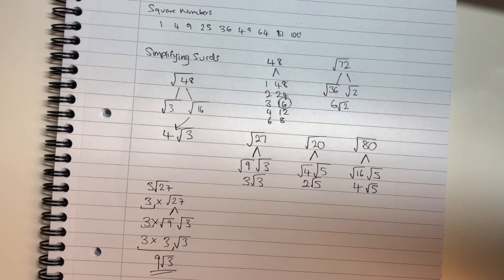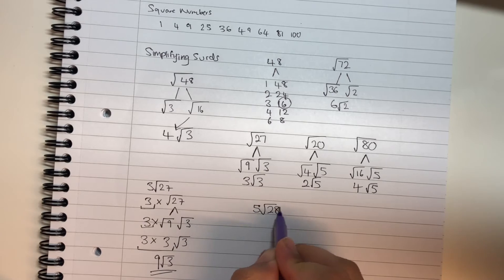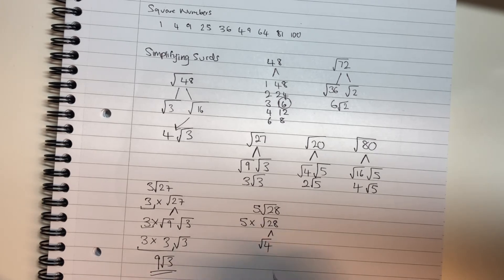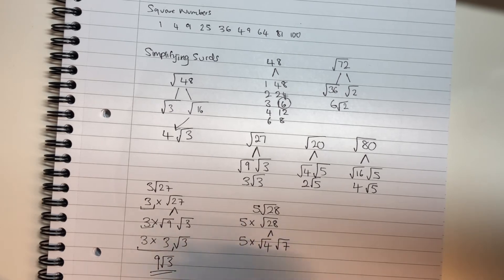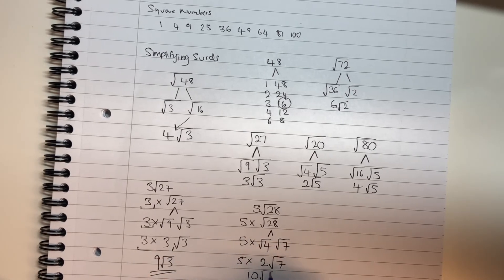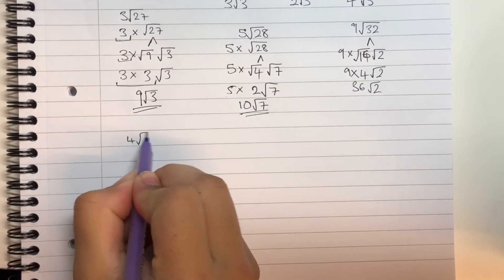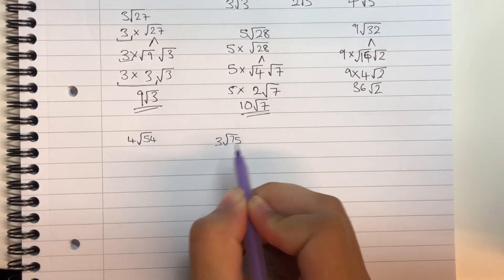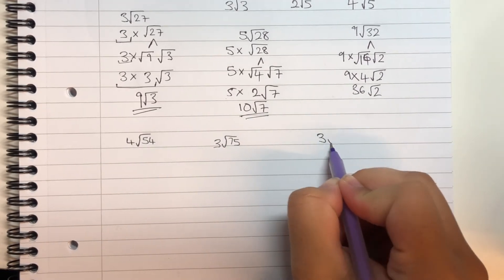Another example: 5 root 28. The 5 is being multiplied by root 28. The biggest square number in 28 is 4, and 28 divided by 4 is 7. Root 4 simplifies to 2, and root 7 stays. The 5 multiplies by 2 to give 10, leaving a final answer of 10 root 7. Questions for you to try: 4 root 54, 3 root 75, and 3 root 50.